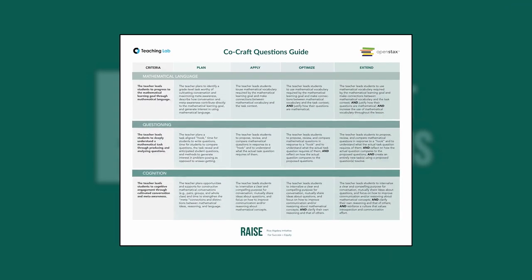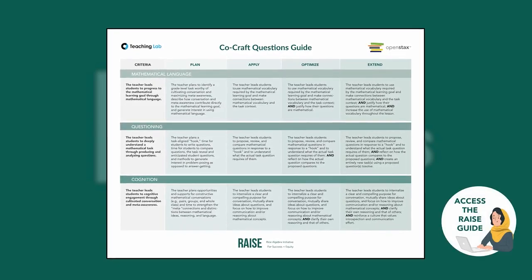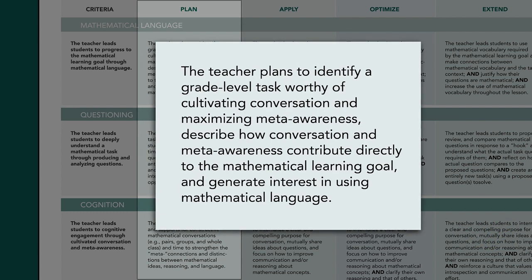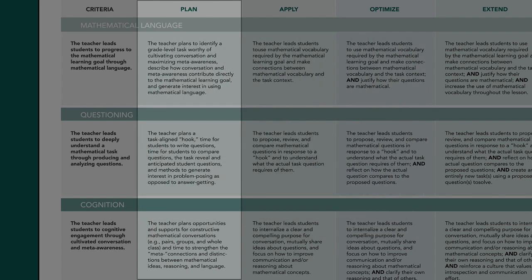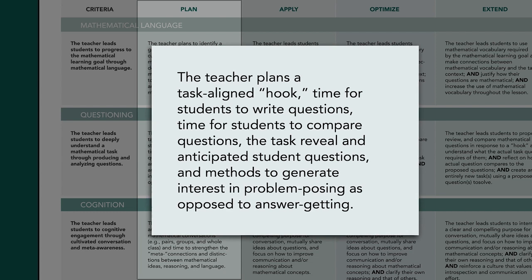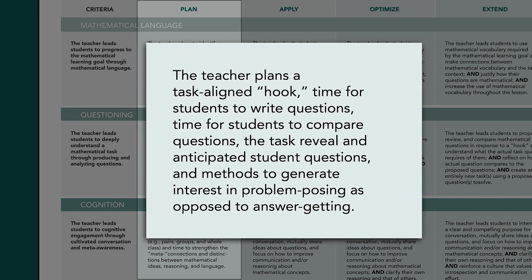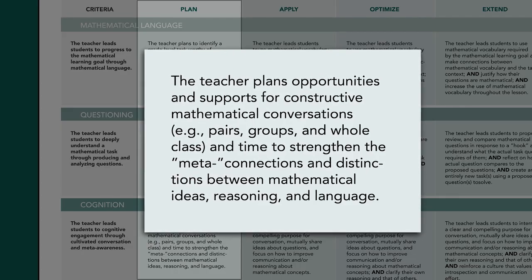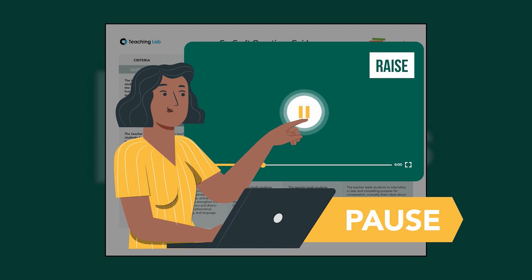Now that you have a task, access the CoCraft Questions guide to inform your planning. Access the RAISE guide now, and specifically the Plan Column's Mathematical Language, Questioning, and Cognition Criteria. Using the guide, first, plan to introduce the task or the hook by providing only as much of the task for students to create questions. Second, plan to present the task information without the action prompt, engage students in conversation, and facilitate a greater awareness of the mathematical terms in the task. Finally, plan to reveal the actual problem. Pause the video now to plan your application.